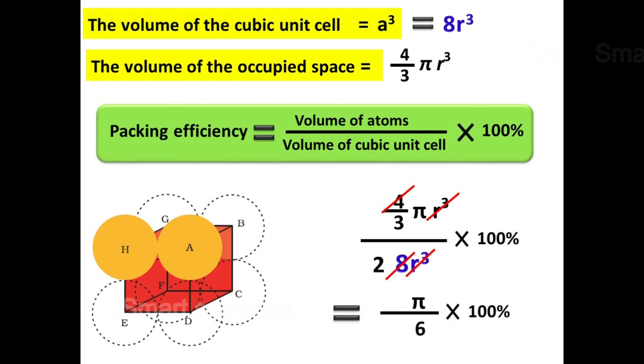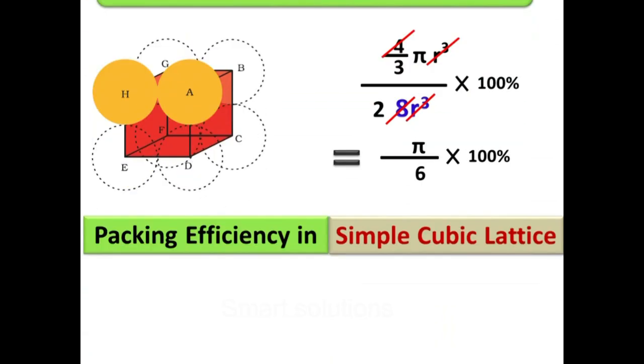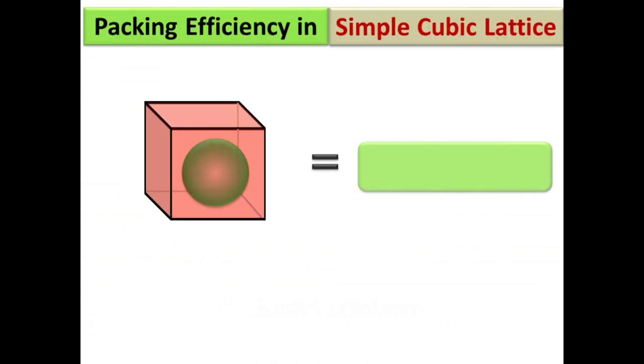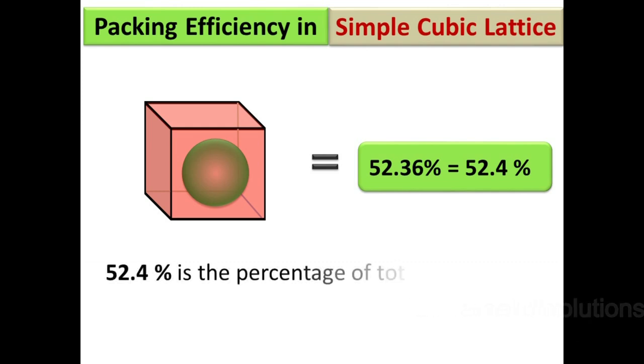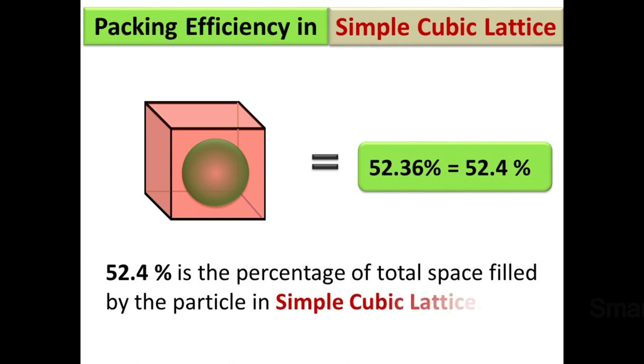So pi divided by 6 times 100%. The packing efficiency in simple cubic lattice is equal to 52.36% which can be written as 52.4%. 52.4% is the percentage of total space filled by the particle in simple cubic lattice.